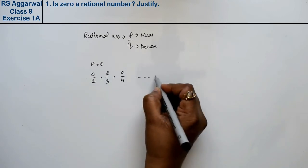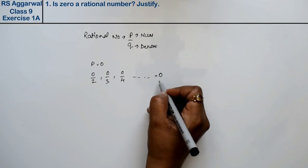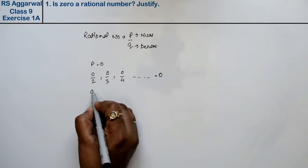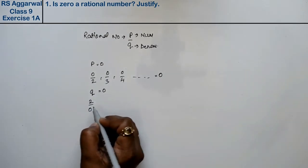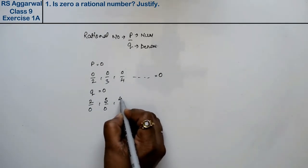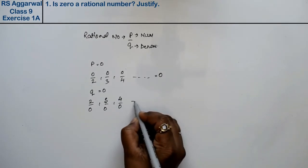But if we take q as zero, then what happens? 2/0, 3/0, 4/0. The answer will always be infinite, right?